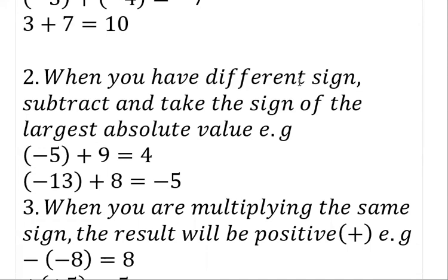Rule number two: when you have different signs, subtract and take the sign of the largest absolute value. For example, we have minus five plus nine. The sign here is minus, the sign here is plus — so you have different signs. All you just need to do is subtract: nine minus five gives four. Now take the sign of the largest value.